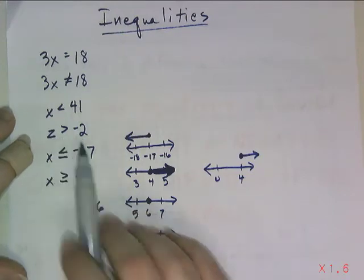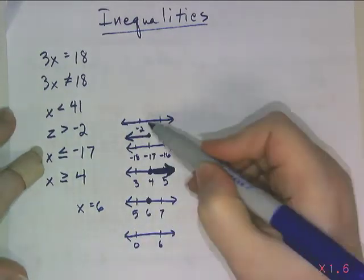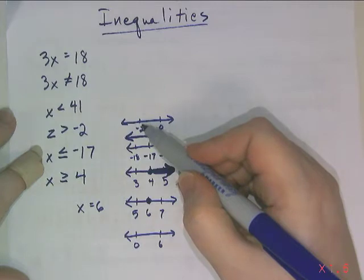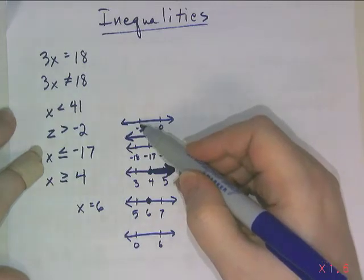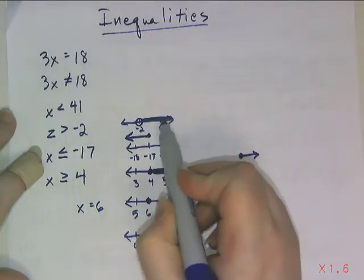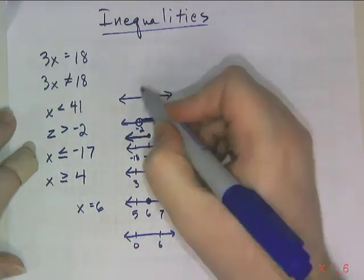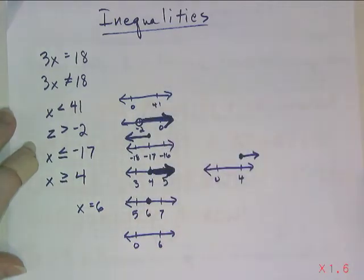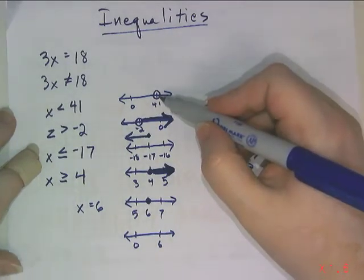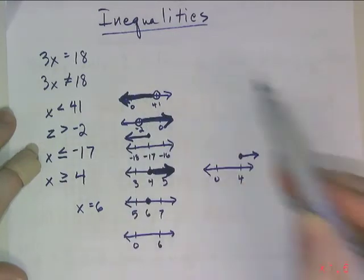When z is greater than negative 2, I can't put a solid dot on negative 2 because z can't actually equal negative 2. To show we can go up to negative 2 without including it, we put an open dot there. Since z is greater than that amount, I shade to the right. Similarly, when x is less than 41, I put an open dot on 41 and shade everything to the left with an arrow.